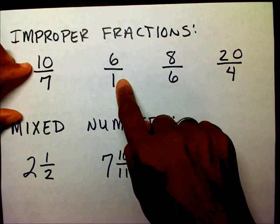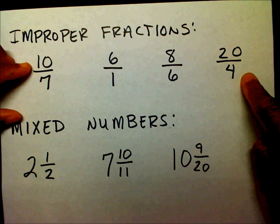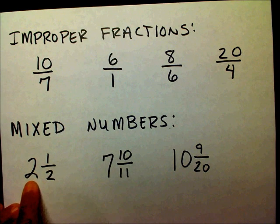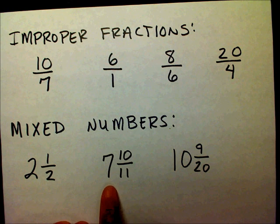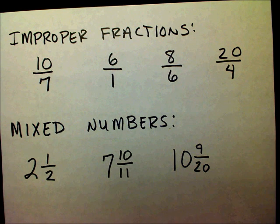Six is larger than one, eight is larger than six, twenty is larger than four. With your mixed numbers you have a whole number with a fraction, a whole number with a fraction, a whole number with a fraction.